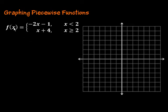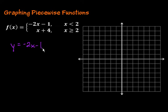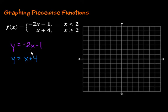f of x is the same as y. So if I take the first piece, y equals — I'm going to take this top part — 2x minus 1. And then for the second part, y equals x plus 4. Notice that these are both linear equations. They're going to be a nice straight line, and they're both in slope-intercept form. So we can go ahead and just start graphing them.